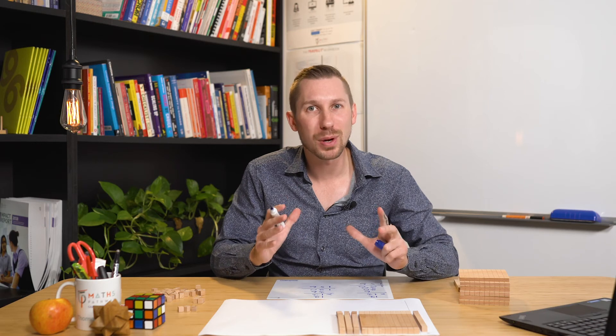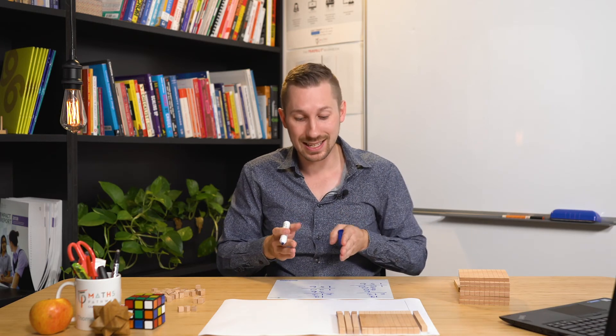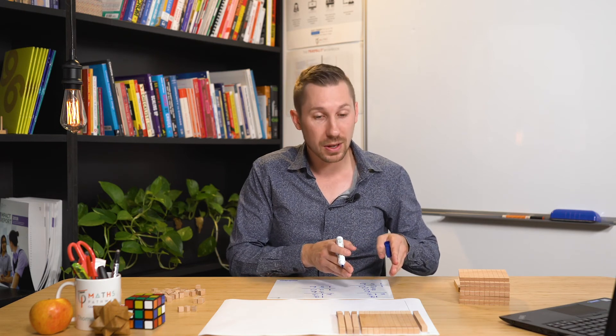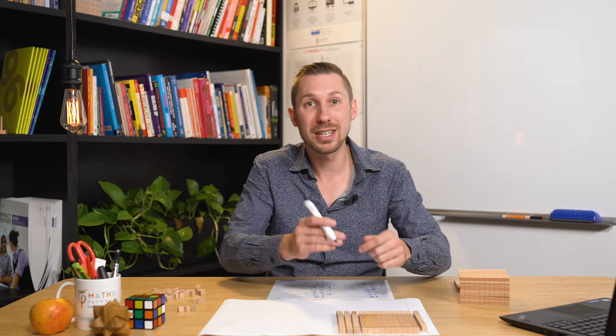The key is bringing in the place value language so that it makes sense and they can see links between what's going on here to what we learnt before, because they've made the links from here to here.